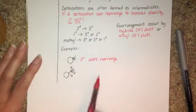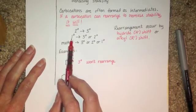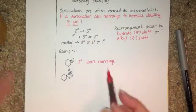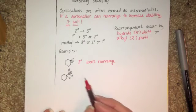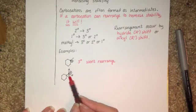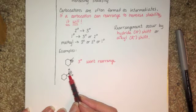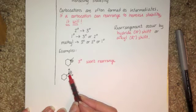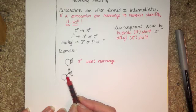And this is a primary carbocation. This is a carbon atom that has only one alkyl group attached to it. When you have a primary, remember, primary will rearrange to form tertiary or secondary, anything. So what you want to do is look at the carbon atom or atoms that are adjacent to the carbon with the positive charge. That would be this guy in this particular case, because there's only one.